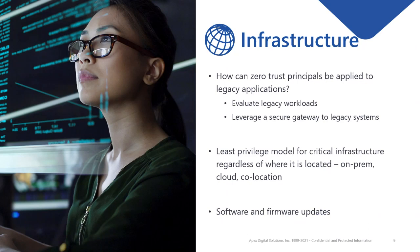The second infrastructure recommendation is a least privileged model for critical infrastructure, regardless of where it's located — whether on-premises in local data centers, at co-locations, or in cloud providers like Microsoft Azure, AWS, or Google. It's important to leverage a least privileged model so we only give access to the users who absolutely need it for their daily jobs. And the last one, which sometimes gets forgotten but is basic: keep up with software and firmware updates on all infrastructure. There have been too many instances of attacks resulting from devices not being updated to the latest software and firmware.